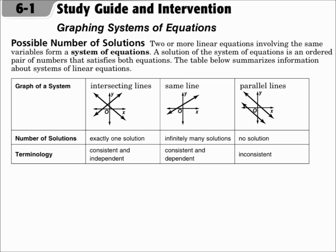Two or more linear equations involving the same variables form a system of equations. A solution of the system of equations is an ordered pair of numbers that satisfies both equations. The table below summarizes information about systems of linear equations.